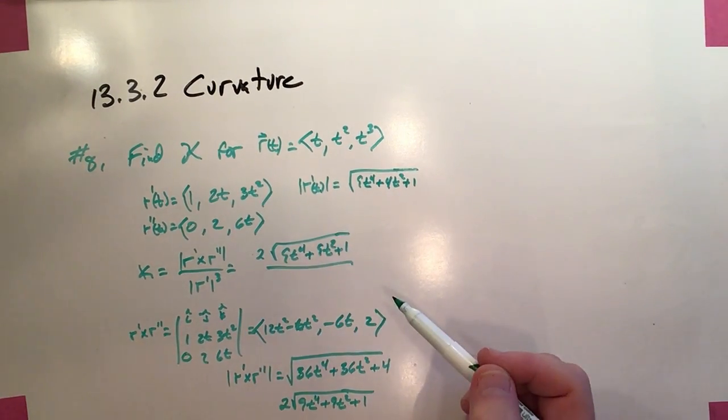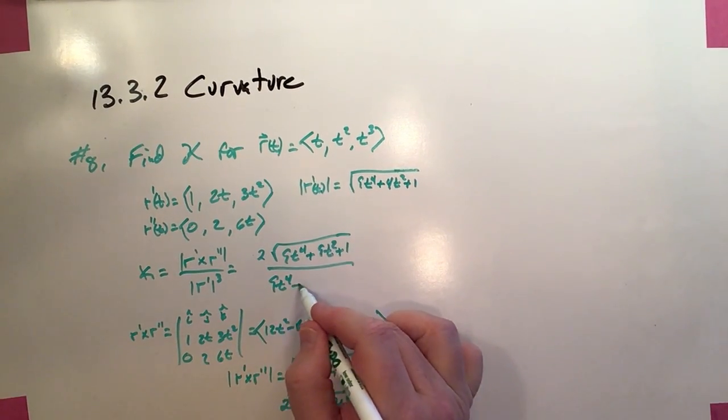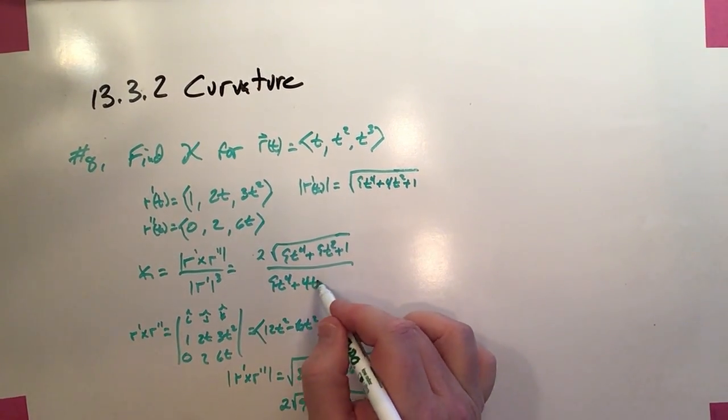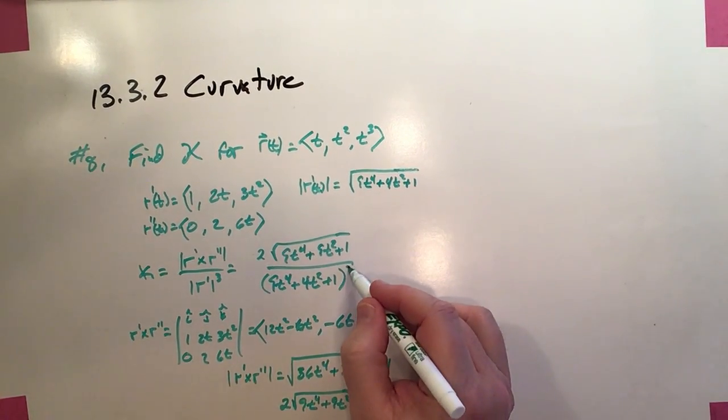And then the denominator is just going to be the magnitude of the velocity cubed. So it'll be the speed cubed. Well, there's the speed right up here. So if I want to cube that, it's just going to be 9t to the fourth plus 4t squared plus 1, and that whole mess to the 3 halves.